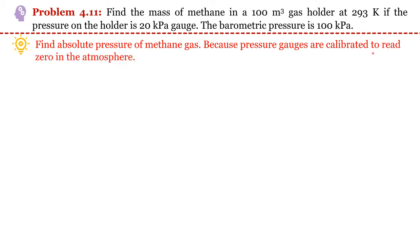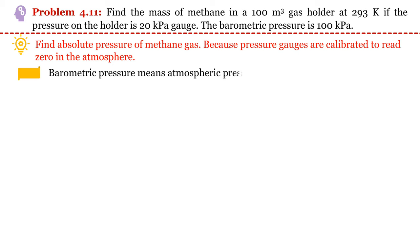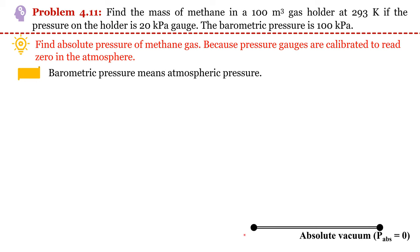Gauge pressures are calibrated to read zero in the atmosphere, so we need to estimate the absolute pressure of the methane gas before we can use the ideal gas equation. The barometric pressure is also given, and barometric pressure means atmospheric pressure. To understand absolute pressure, consider the base as absolute vacuum where absolute pressure is zero, and somewhere above that we have atmospheric pressure.